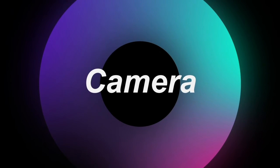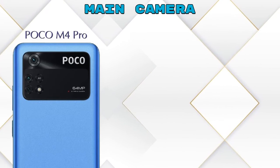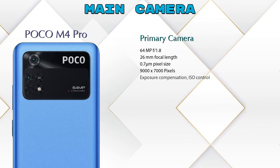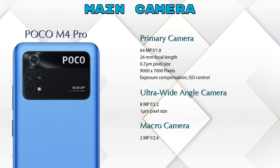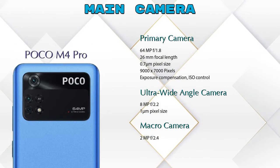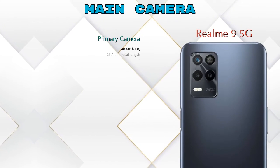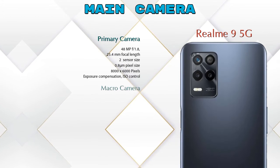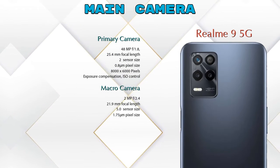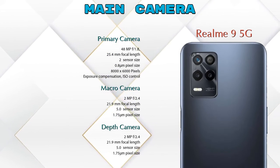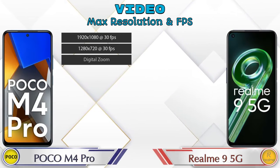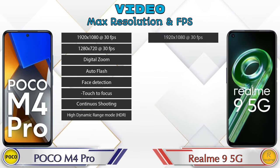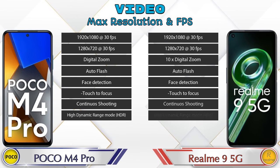Let's see the details about our favorite feature — camera. Poco M4 Pro has three rear cameras: a primary camera, an ultra-wide angle camera, and a macro camera. Realme 9 5G also has three cameras: a primary camera, a macro camera, and a depth camera. For video, both phones have eight different types of features available.